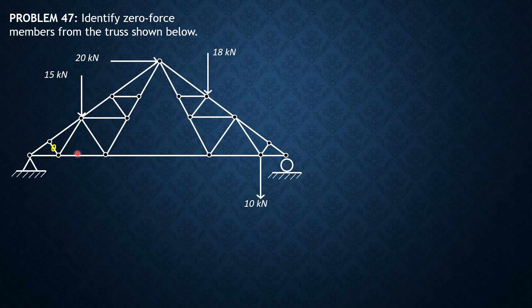At this joint, there are four members, but because the previous one is zero, it's like there are only three members. The two remaining are collinear — this is unique. Therefore, this member carries no force.